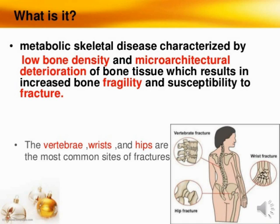What is osteoporosis? It is a metabolic skeletal disease characterized by low bone density and microarchitectural deterioration of bone tissue, which results in increased bone fragility and susceptibility to fracture. If we think about the single word of osteoporosis, it means low bone density. Density means the degree of compactness of a substance.